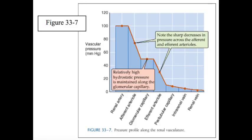The renal microvasculature has two unique features. First, this vascular bed has two major sites of resistance control: the afferent and efferent arterioles. Second, it has two capillary beds in series.